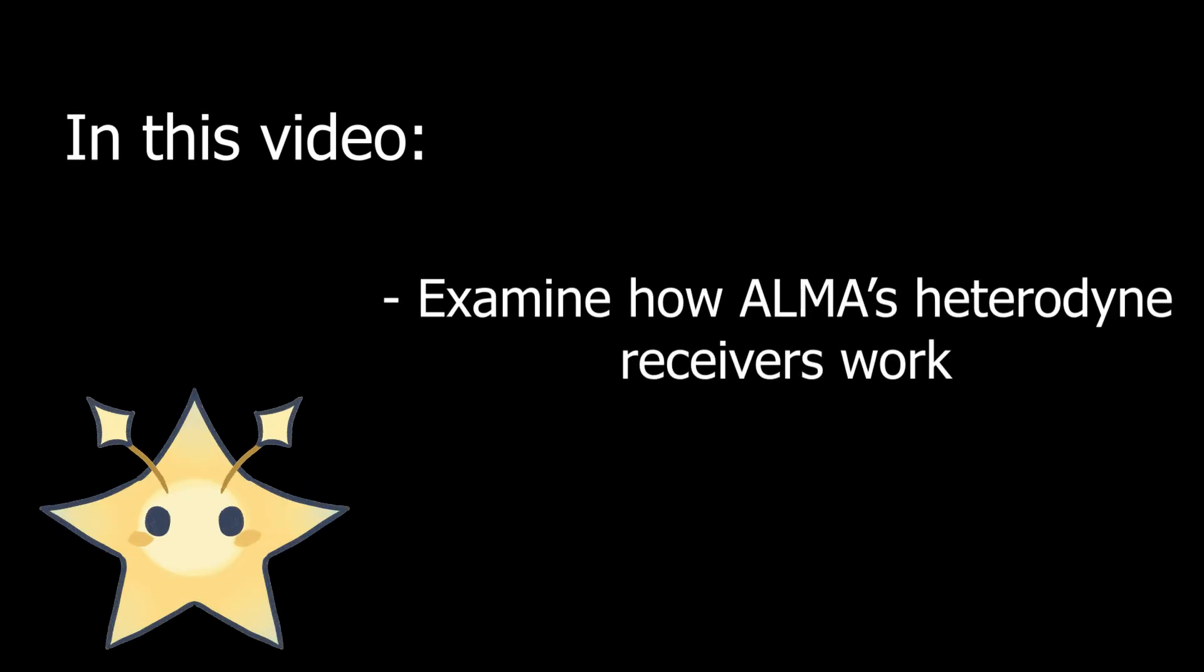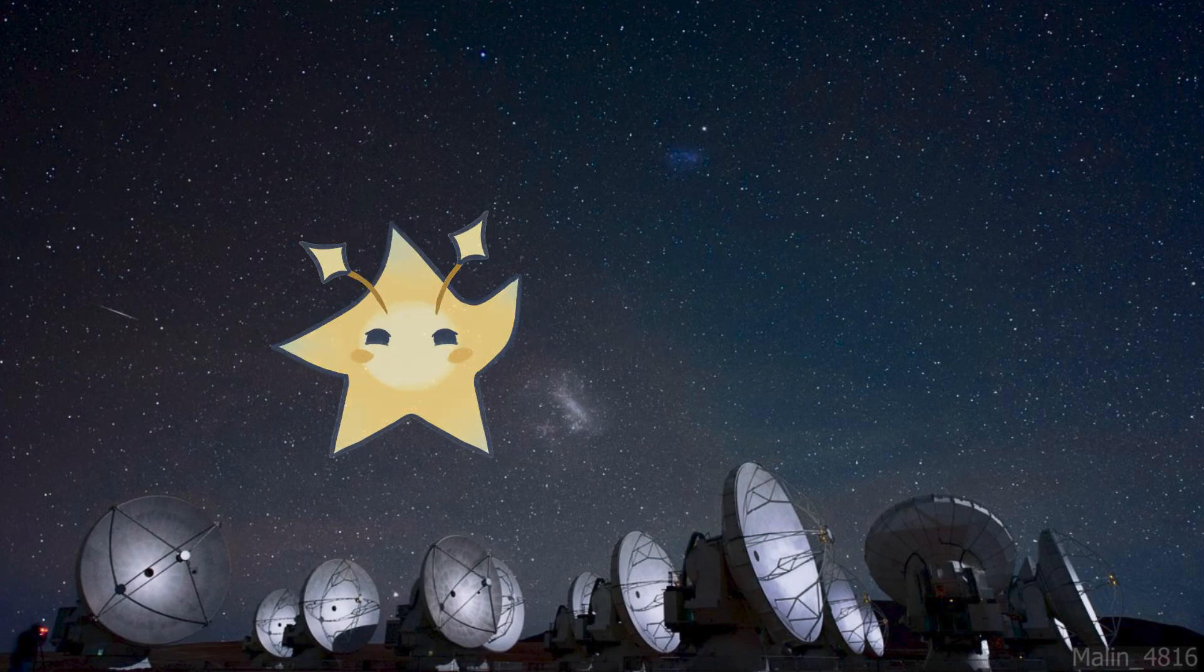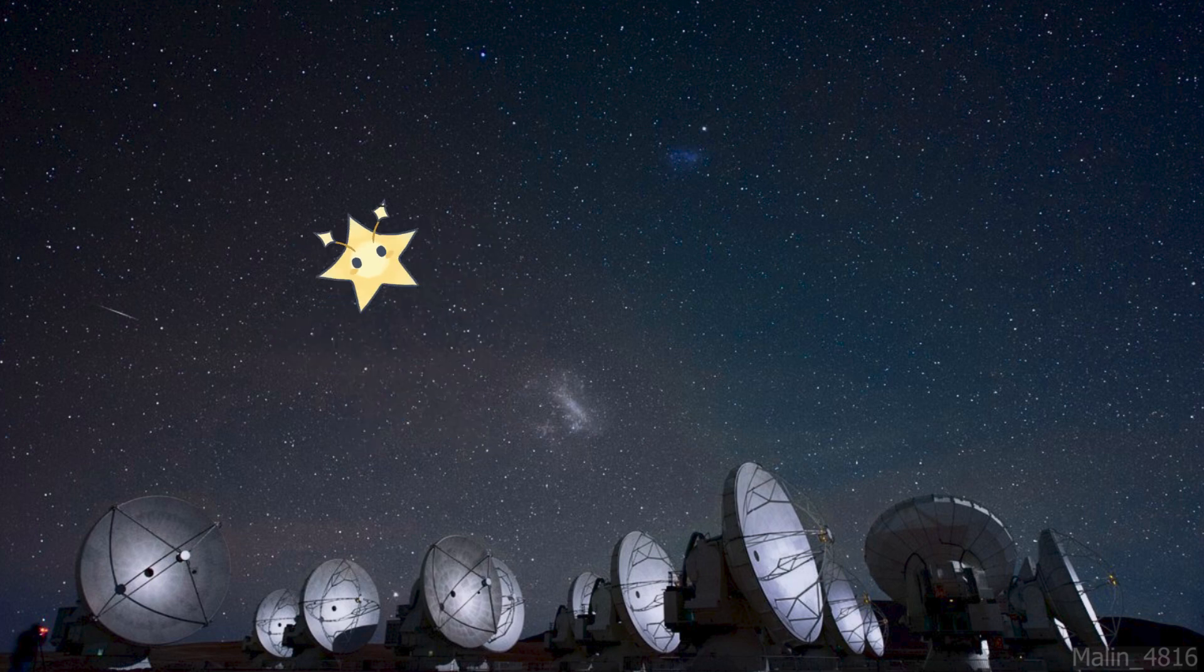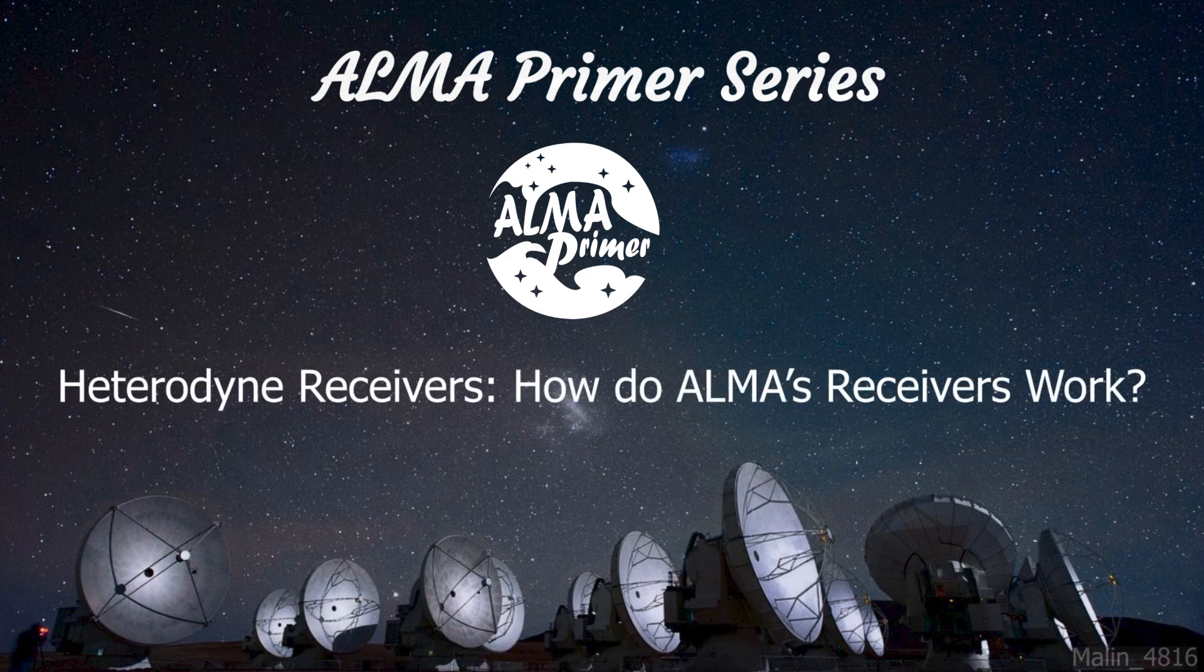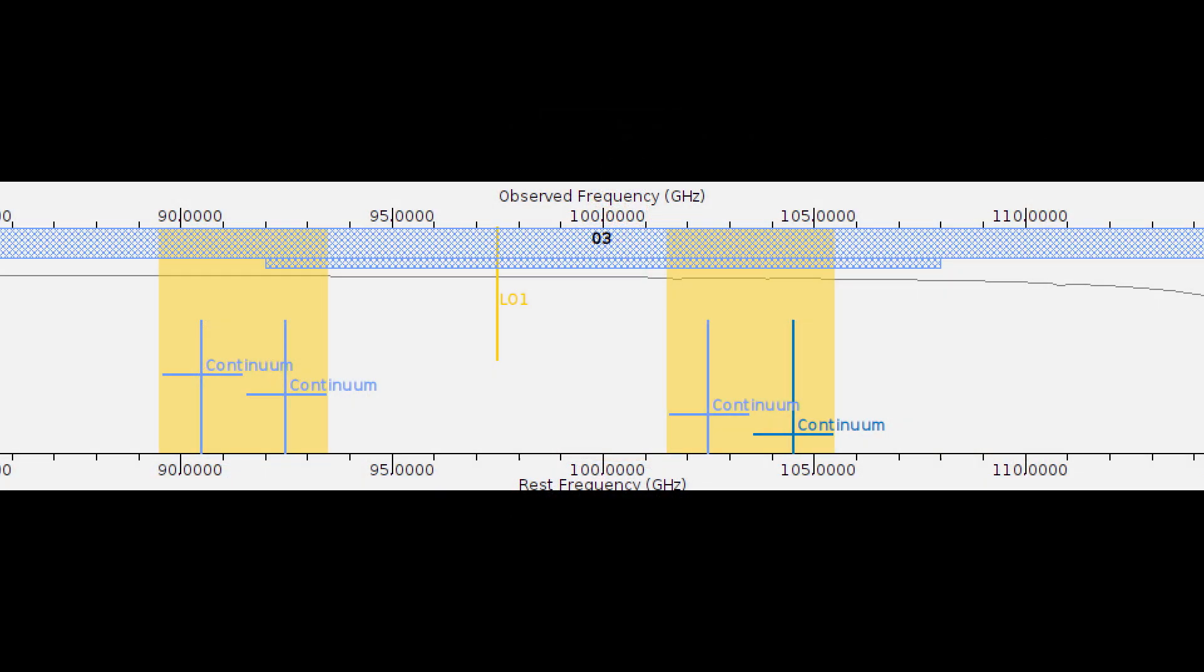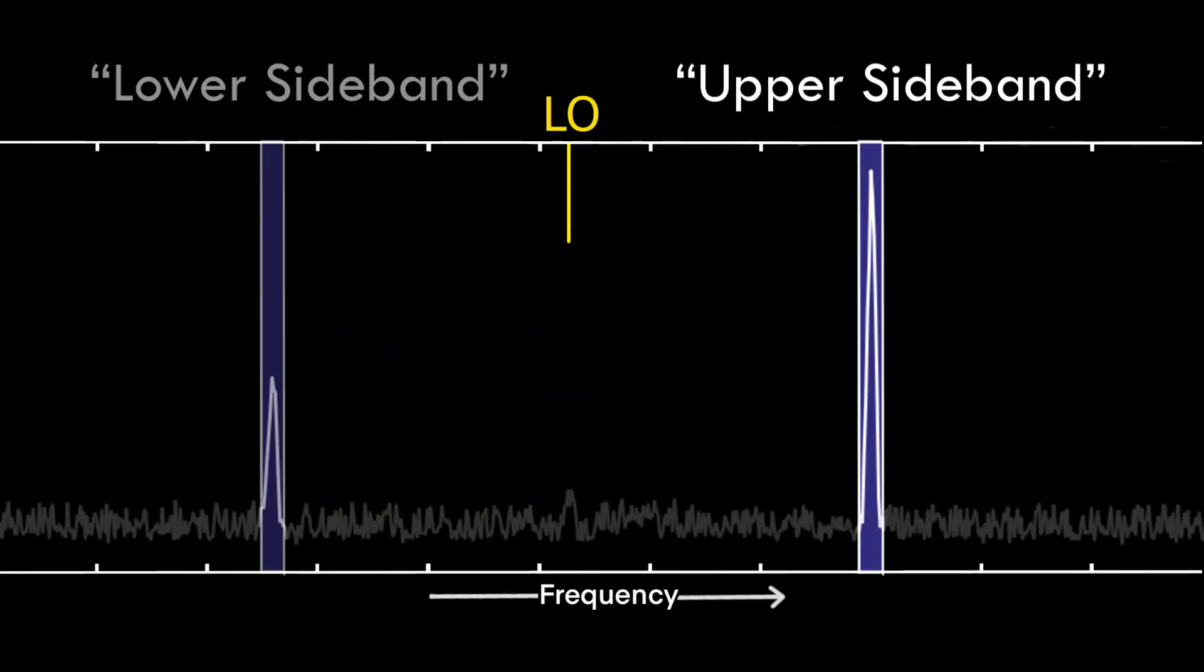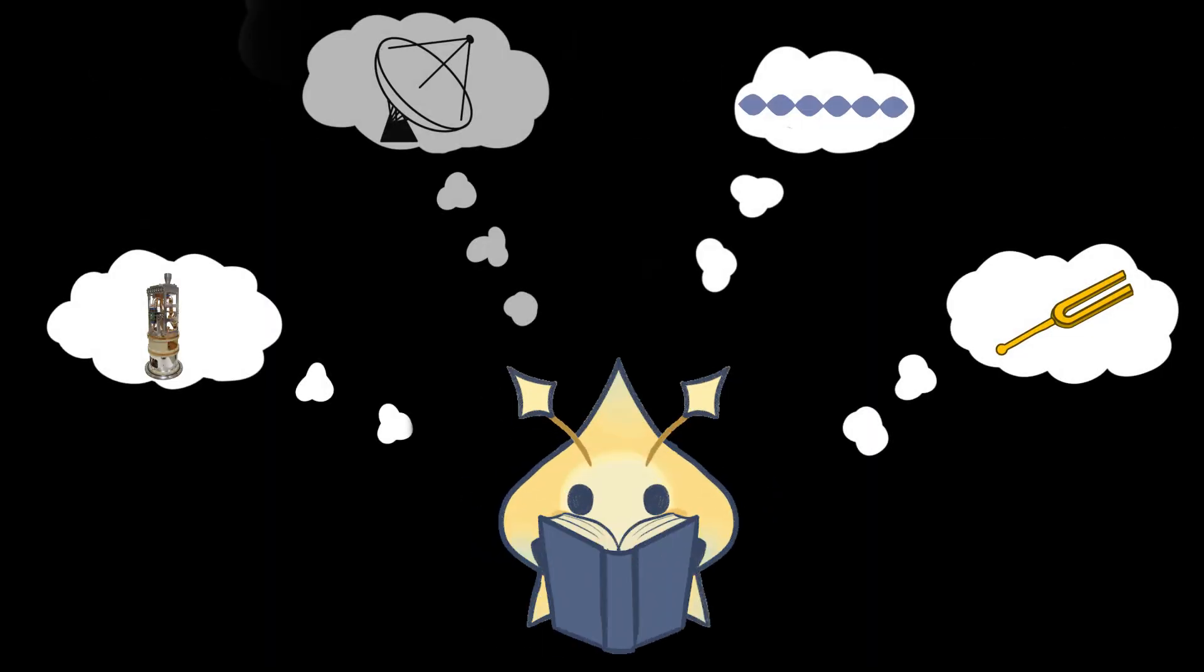In this video, we'll briefly examine how ALMA's heterodyne receivers work and how they create sidebands. When learning about ALMA receivers and when using the ALMA Observing Tool, you'll often see the term sideband - as in upper sideband, lower sideband, and so on. But what does sideband mean? To answer this, we need to understand how ALMA's receivers work.